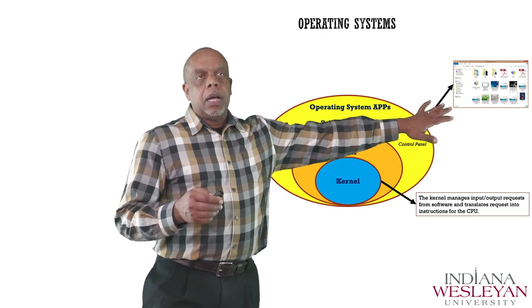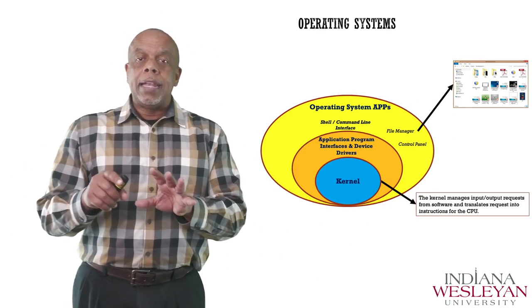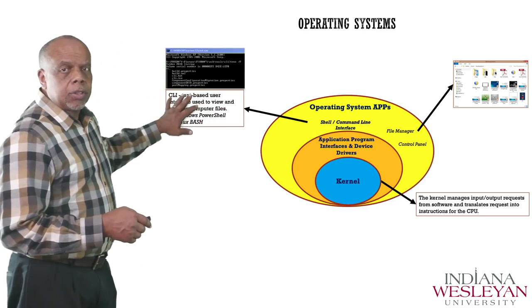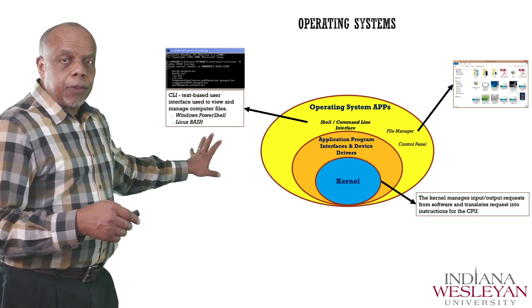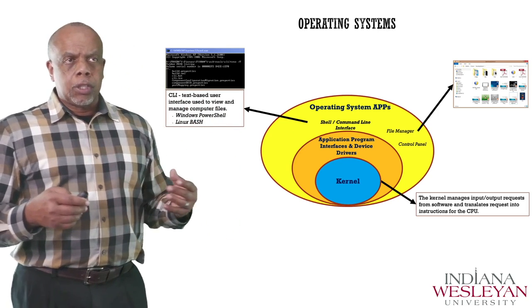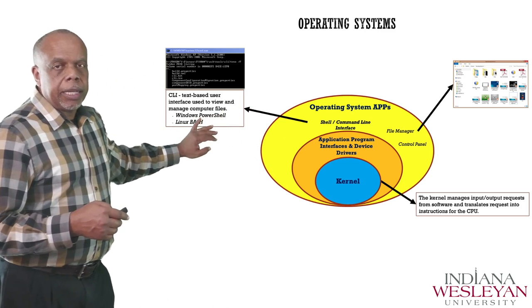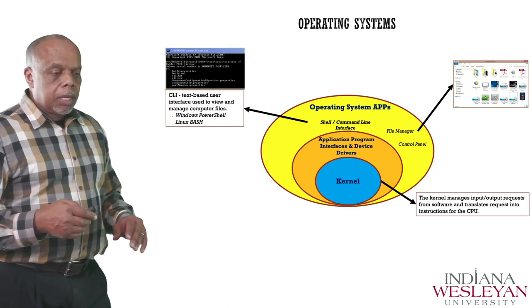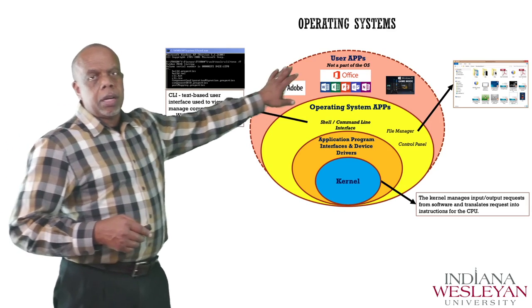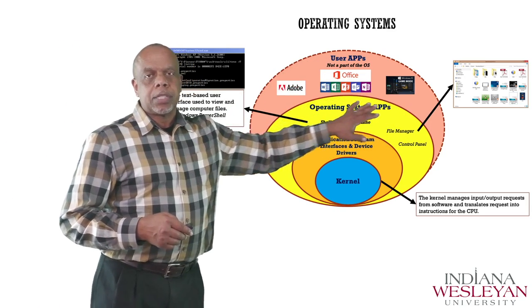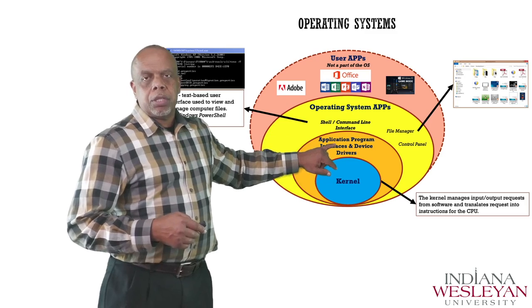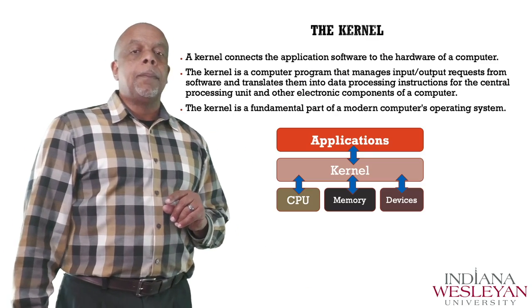Here's just an example of file manager and the different things you can do within it — that is an operating system application. Also within this area, this is where we have our command line interface — things like Windows PowerShell or Linux Bash, which is the shell used with Linux. There are multiple shells used in the Linux environment. This area is not part of the operating system, but this is where your user applications reside. They are installed on the operating system. But through these three layers — the kernel, the device drivers, and the operating system apps — that's what makes up an operating system.